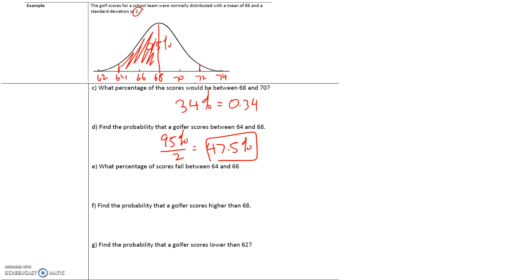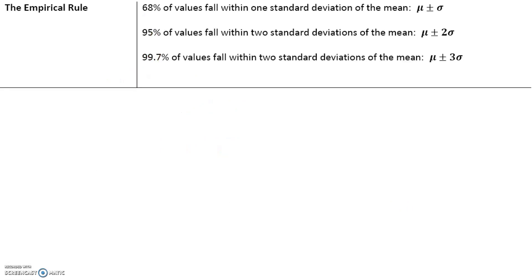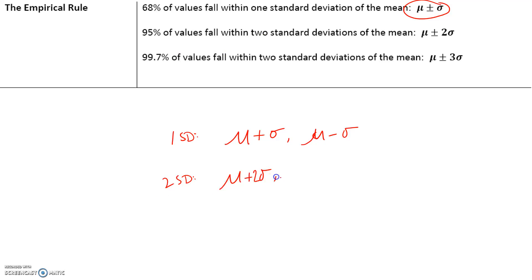Try letters E, F, and G by yourself. To summarize the empirical rule: 68% of values fall within one standard deviation, given by mu ± sigma. 95% fall within two standard deviations: mu ± 2sigma. 99.7% fall within three standard deviations: mu ± 3sigma.